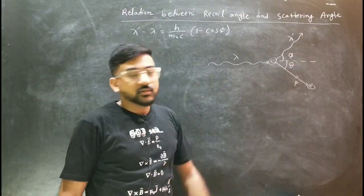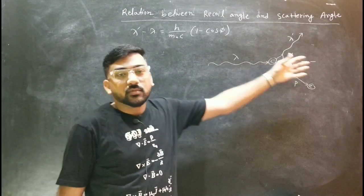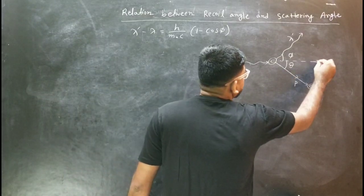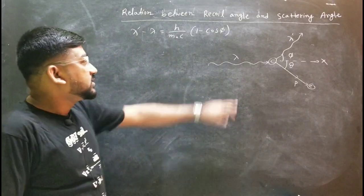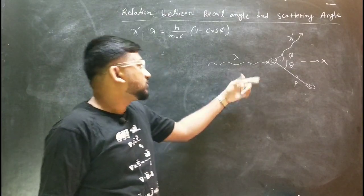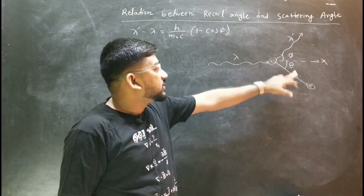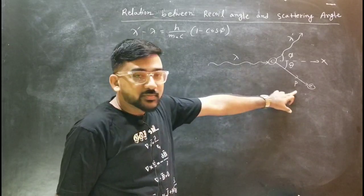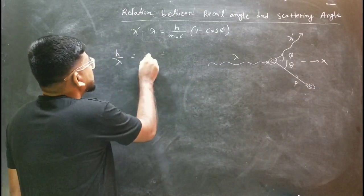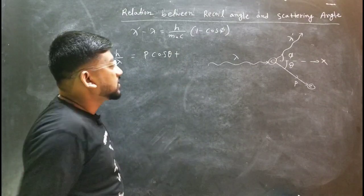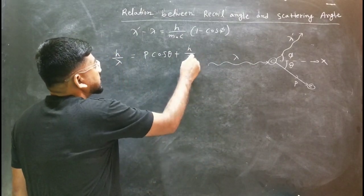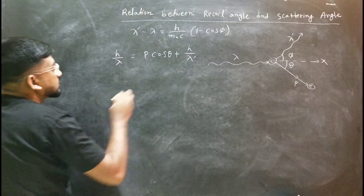Today I want to establish the relation between phi and theta using momentum conservation. Along the x-axis, the initial momentum of the photon is h over lambda. After the collision, the x-component of the electron's momentum is p cos theta, plus the x-component of the scattered photon's momentum h over lambda dash cos phi.